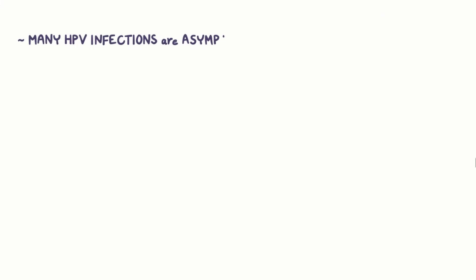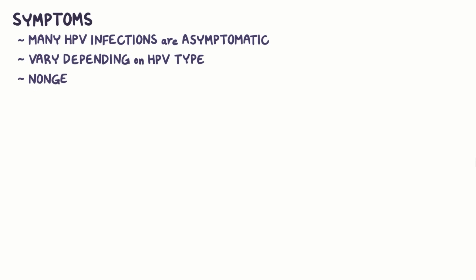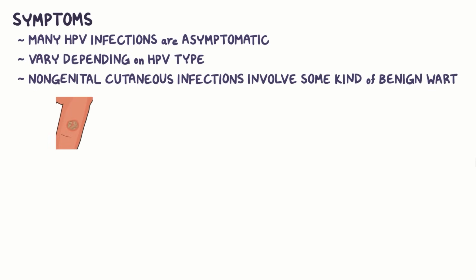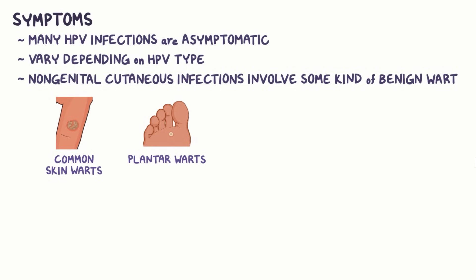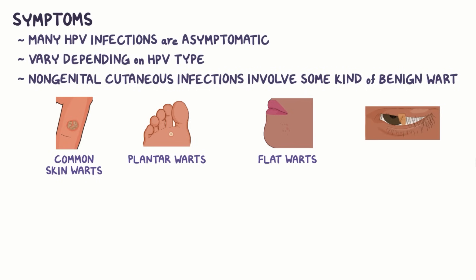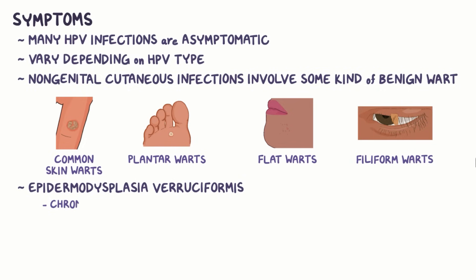Many HPV infections are asymptomatic, but when symptoms are present, they can vary by HPV type. Symptoms of non-genital cutaneous infections can involve some kind of benign wart. Common skin warts of the hands or nails are typically painless dome-shaped projections that give the skin a rough appearance. Plantar warts on the soles of the feet can be painful and scaly. Flat warts of the face and extremities, particularly in the pediatric population, are often painless, small, smooth, and flat-topped, but numerous. Filiform warts of the face, particularly the eyelids and lips, have long projections that appear thread or finger-like. And in rare cases, where there's an underlying genetic disorder called epidermodysplasia verruciformis, a chronic cutaneous infection can start out as flat warts and transform into skin cancer.